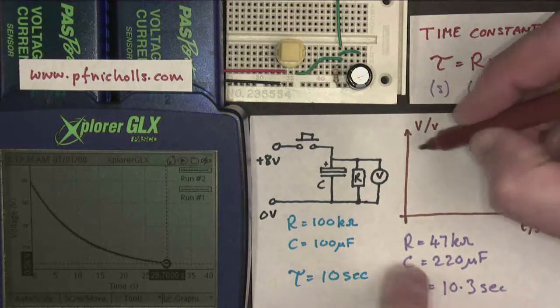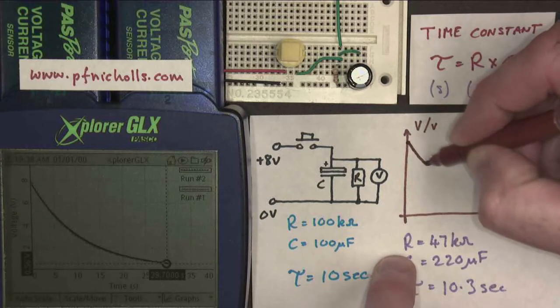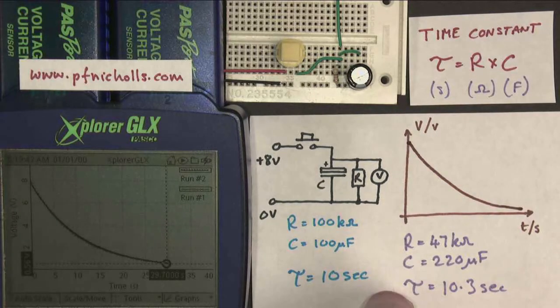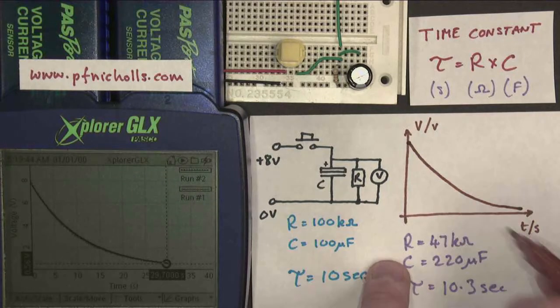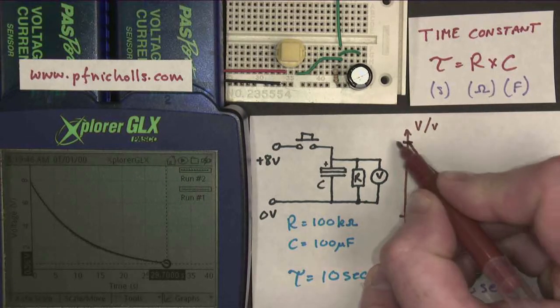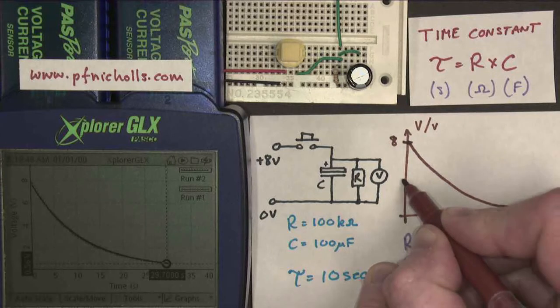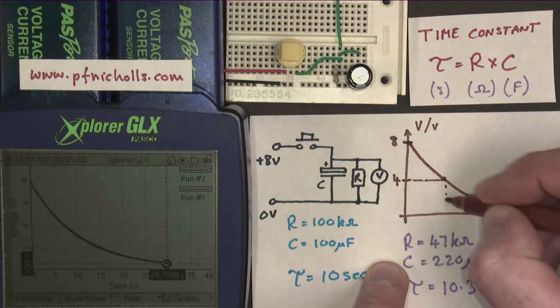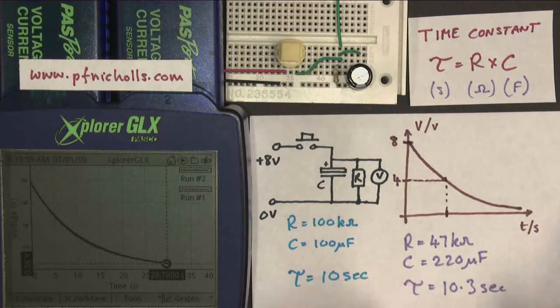So my graph looks like this. It starts off touching the axes and it curves its way down towards the axes like that. We started off at 8 volts. How long does it take to get halfway down? How long does it take to get to 4 volts?